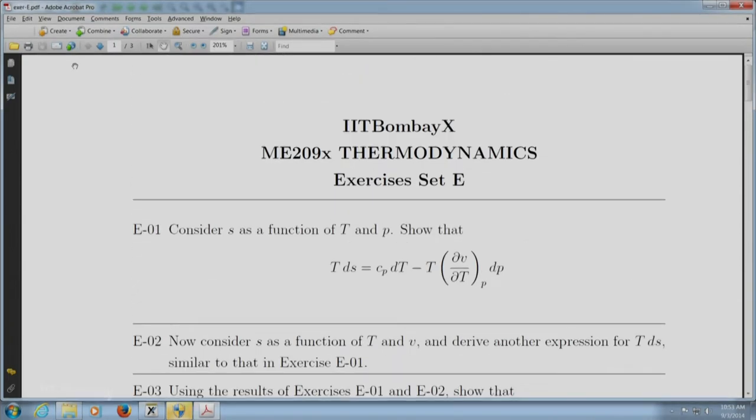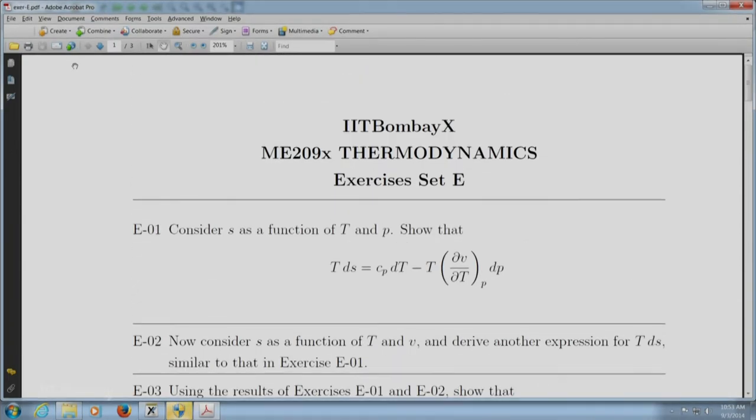Many of these are standard exercises. Most ask you to derive partial of x with respect to y at constant z, where x, y, z is a triplet of thermodynamic properties. You select some property for x, another for y, and a third for z, then derive an expression.